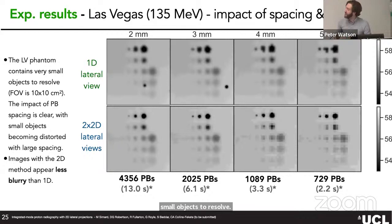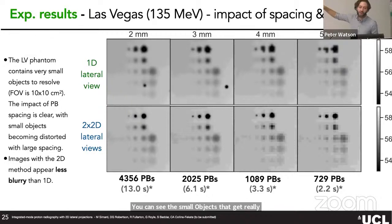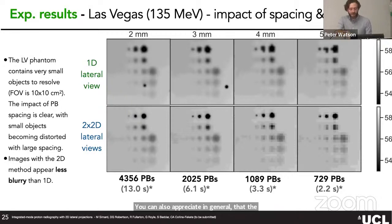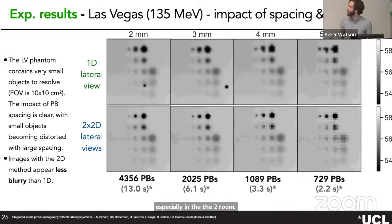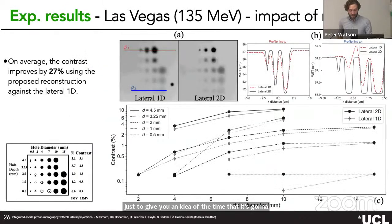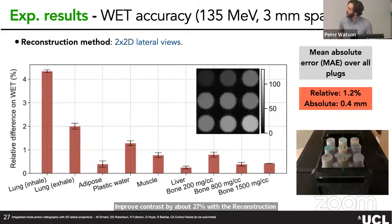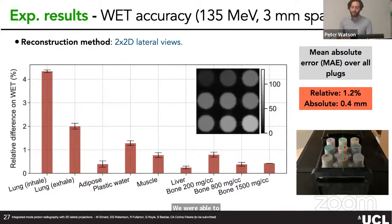For the Las Vegas phantom results, from left to right you have different beam spacings; from top to bottom, two reconstruction methods — the literature method on top and our developed method on the bottom. The Las Vegas phantom contains very small objects, and you can see the impact of pencil beam spacing clearly — small objects become distorted with larger spacing due to sampling issues. Our 2D method is noticeably less blurry than the literature method, especially in the 2 mm images.